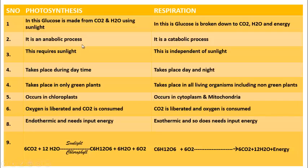Photosynthesis is an anabolic process. An anabolic process is one in which bigger molecules are made from small molecules. Here glucose is made from simple molecules called carbon dioxide and water, so it is anabolism. The opposite is a catabolic process — respiration is a catabolic process where bigger molecules are broken down to simpler substances. Glucose is broken down to carbon dioxide and water. Making process is anabolic; breaking process is catabolic.